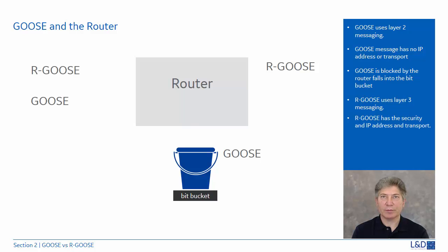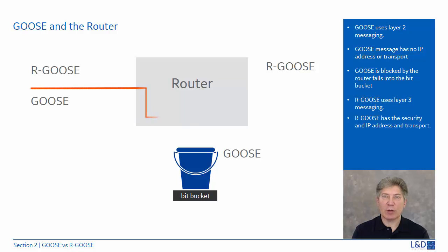Let's take a look at what happens to a standard GOOSE and a Routable GOOSE when they reach a firewall on a router. The standard GOOSE is a multicast Layer 2 messaging service originally intended for use only within a LAN environment. GOOSE messages don't have an IP address or transport capabilities — when it reaches a router, the firewall doesn't know what to do with it and drops it into a bit bucket, essentially blocking it from getting past a router.